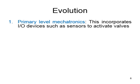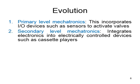Mechatronics evolved in four stages. The first is primary level mechatronics, where input/output devices such as sensors were used for activating valves. That initial use of sensors to actuate valves is considered the primary level mechatronics. In secondary level mechatronics, electronics were integrated with electrically controlled devices such as cassette players.